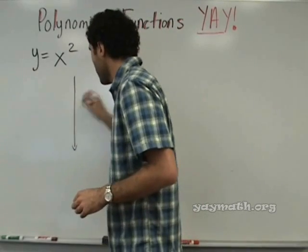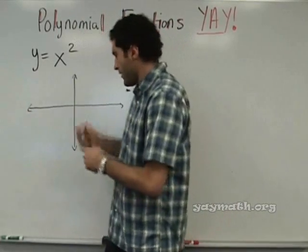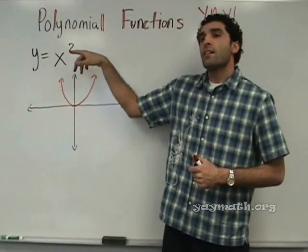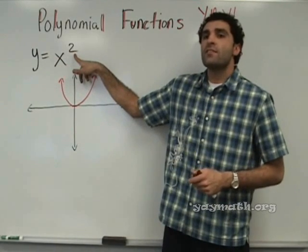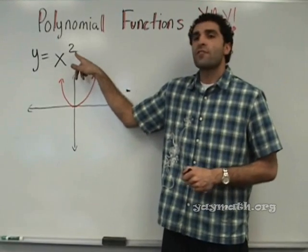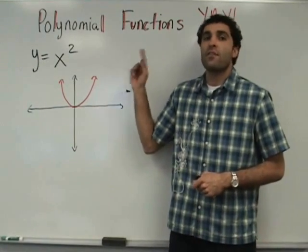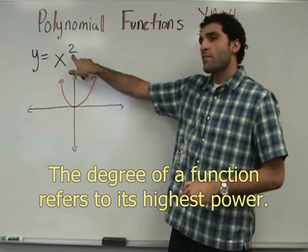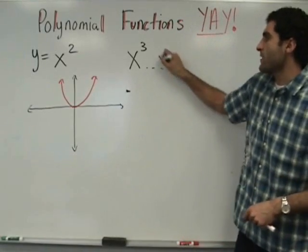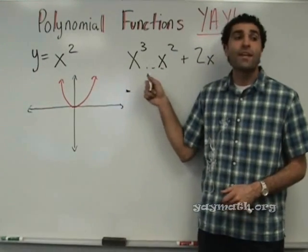So notice — parabola, let's do it in red. First we're going to start defining some terms. The degree of this term is degree 2. This is a second degree function. Alright, the degree is the biggest power. So degree 2. Y equals x cubed would be degree 3, a third degree function. X squared — second degree function — the biggest power.